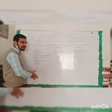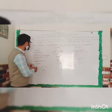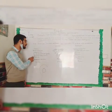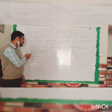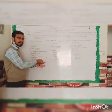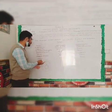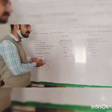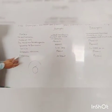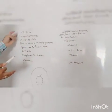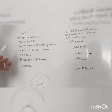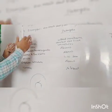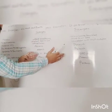Here I have written some of the organelles we will compare: the nucleus, the number of chromosomes, cell type, membrane-bound organelles, lysosomes, peroxisomes, ribosomes, the endoplasmic reticulum, and the last one is vacuoles. These organelles will help us identify whether a cell is prokaryotic or eukaryotic.